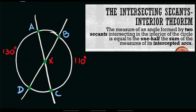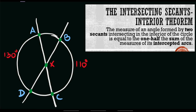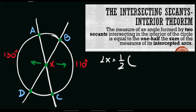For our next example, we have a given angle x to solve, where arc BC equals 110 degrees and arc AD equals 130 degrees. Using the same procedure, angle x equals one half of its intercepted arcs — that is arc BC plus arc AD.